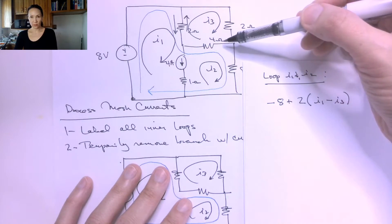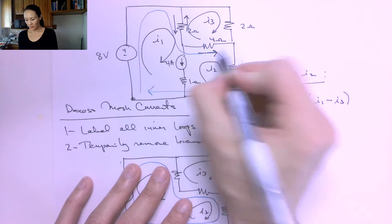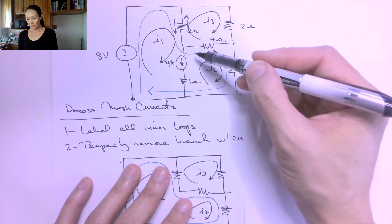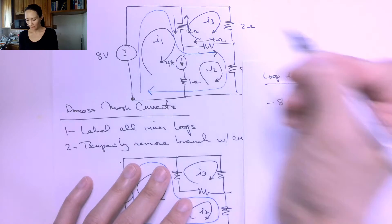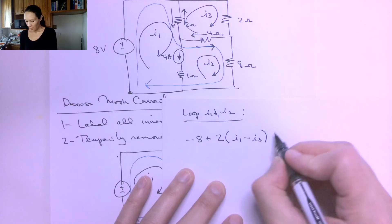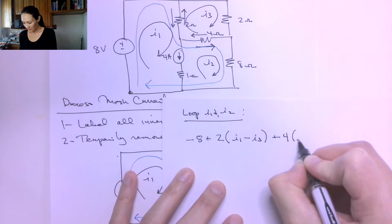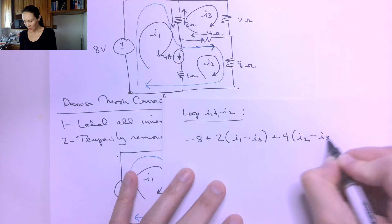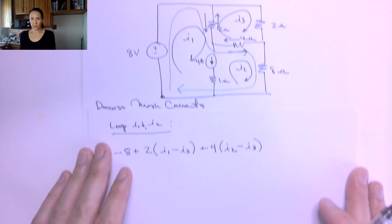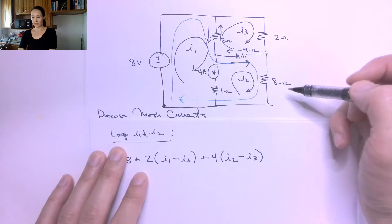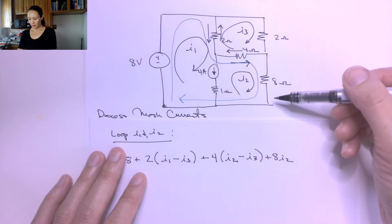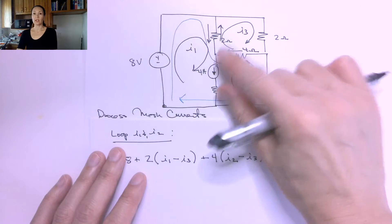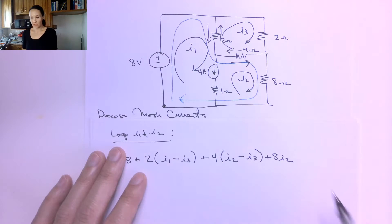Continuing along the blue loop, the next thing we encounter is this 4-ohm resistor. We're now in the I2 region — I2 is moving left to right, and I3 is also touching this 4-ohm resistor but going right to left. So in our equation this gives us plus 4 times (I2 minus I3). Then the next circuit element is this 8-ohm resistor: this will be 8 times I2, because that's the only current touching it. We continue on, having pretended to remove that branch, until we get back to where we started, and KVL lets us set this whole thing equal to zero.